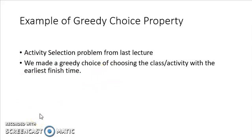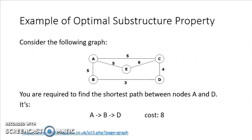Let's first discuss an example of the greedy choice property. In the last lecture we studied the activity selection problem, so we'll use that as our example. In activity selection, the greedy choice we made was choosing the activity with the earliest finish time. We studied three greedy choices and determined that choosing by earliest finish time is the correct one. We'll prove the correctness of that greedy choice later in today's lecture.